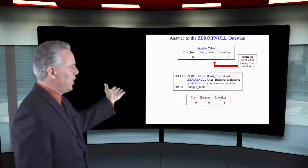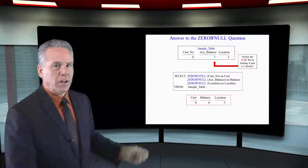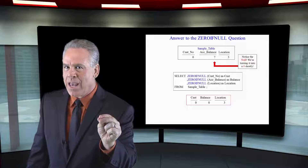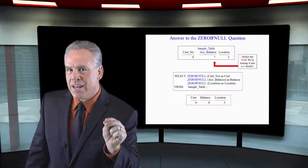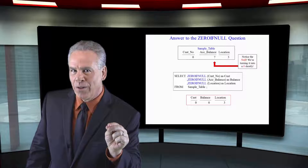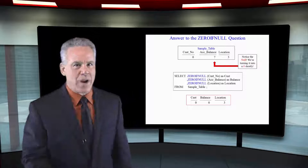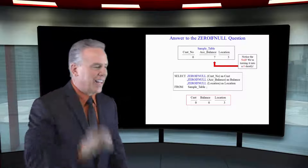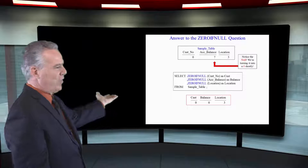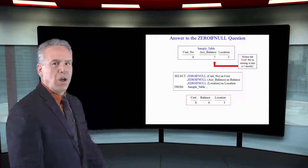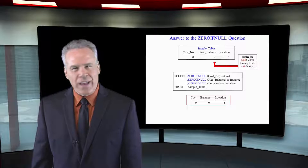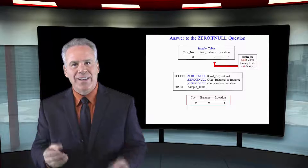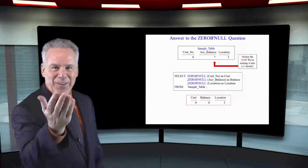Then we said ZEROIFNULL account balance, and that is a null, so you make that a zero. And then lastly, we said ZEROIFNULL location, and that's not null, so leave it as is — it's a three.